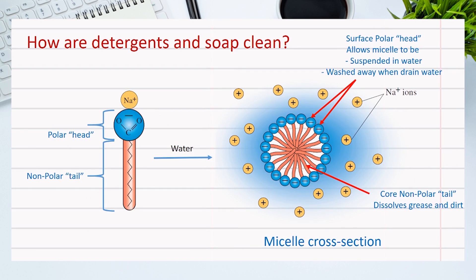How do detergents and soap clean? If we look at the structure of soap, it is formed of three zones: the non-polar tail, the R-group, and the negative polar head — the carboxylate group — which is attached to a positive sodium ion.